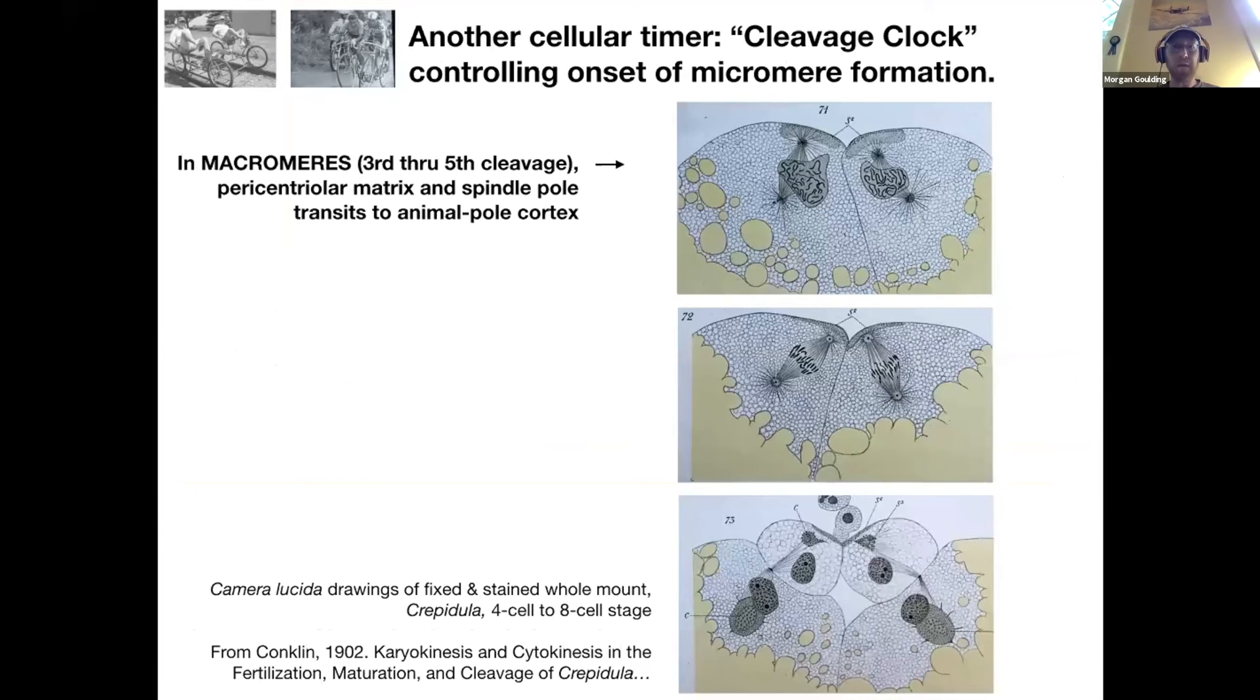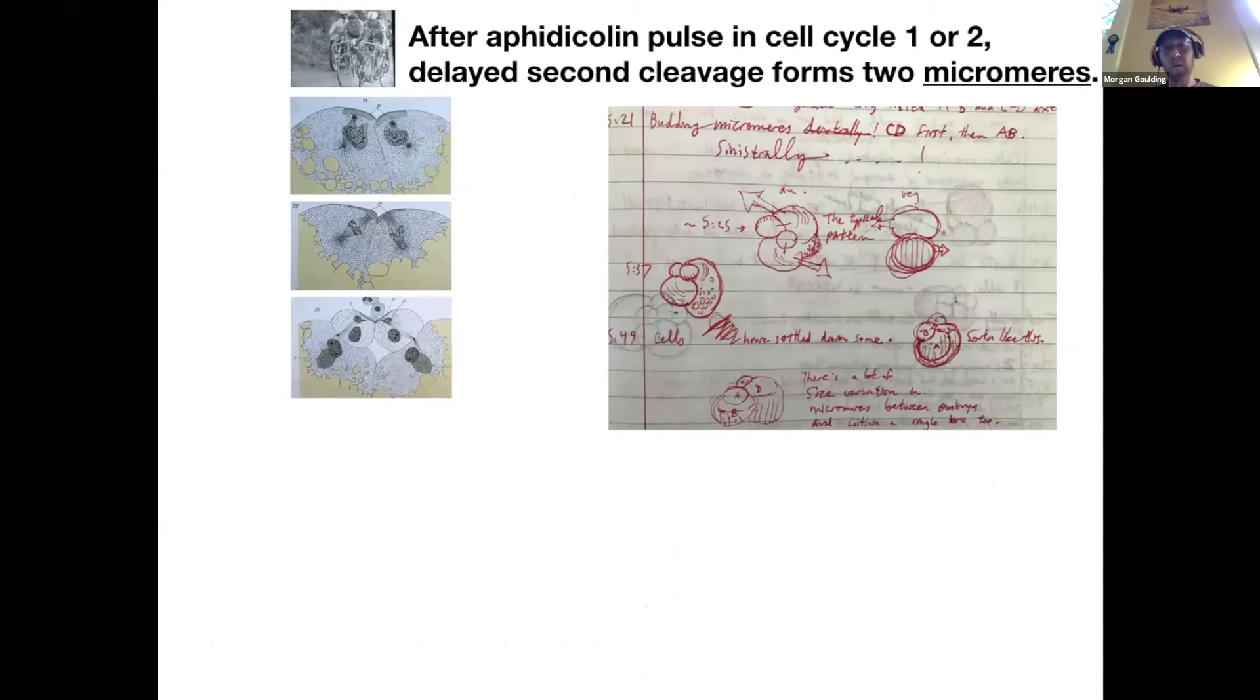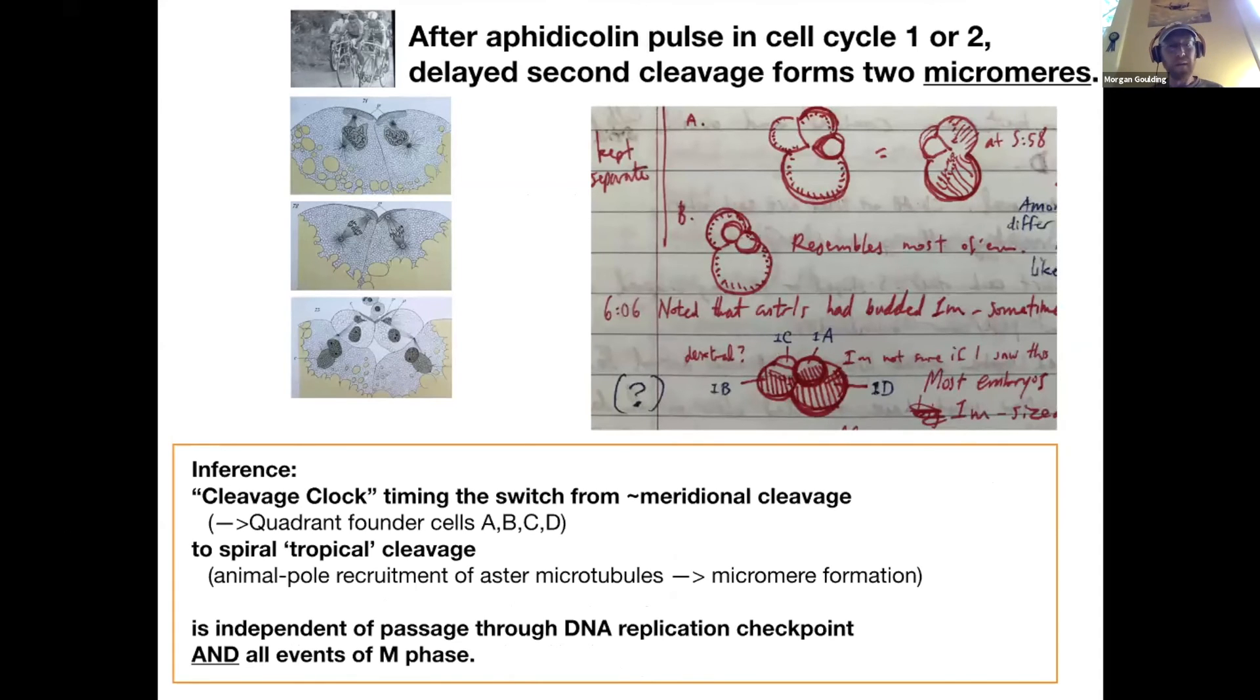One last thing. There's this legendary mythical cleavage clock that controls the onset of micromere formation at third cleavage, and that's repeated at fourth and fifth, where the spindle pole gets fastened onto the animal pole cortex. These beautiful drawings from Edwin Conklin, colored in by his wife, show this process in beautiful detail. What I did was I treated with aphidicolin in the first or second cell cycle. And I was astonished to find that when these cells divide, when they go through their second cleavage, a whole cell cycle period late, what they do is they form micromere duets. Yeah, they look like this. And so the cleavage clock is running independent of mitosis, everything that happens in mitosis, and it's independent of this DNA replication checkpoint.